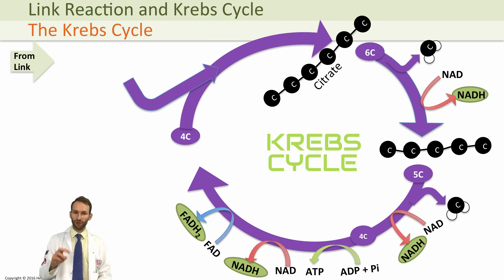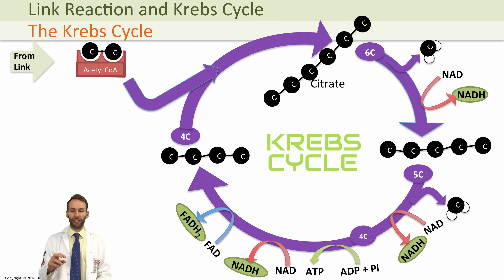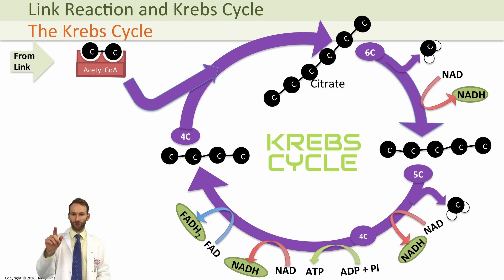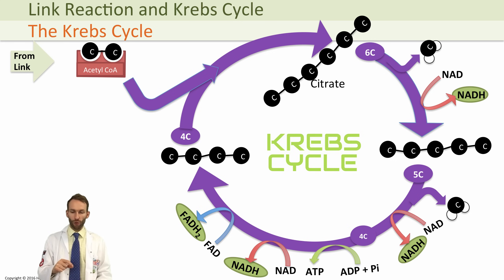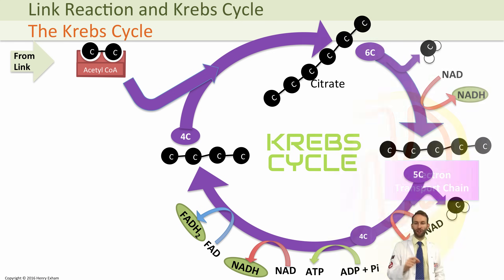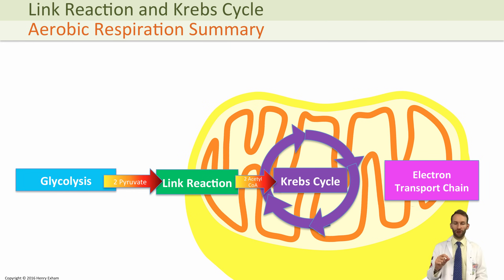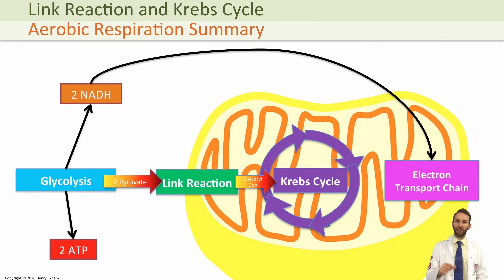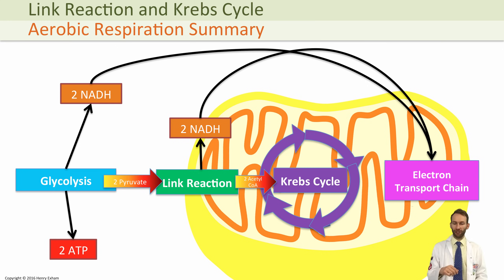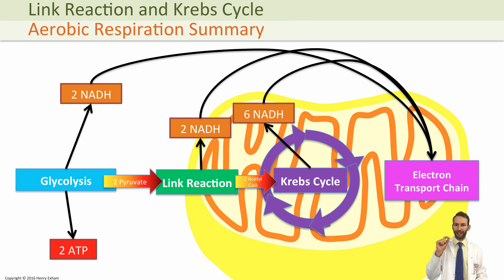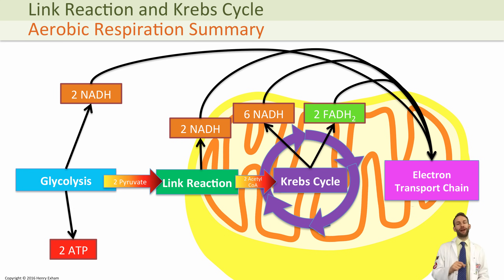Remember that we did start with two acetyl-CoAs, so we're actually going to end up with six NADHs — there are three on the diagram, but this happens twice because there were two acetyl-CoAs at the beginning. We end up with two FADH2s and two ATPs. Going back to our overall summary of aerobic respiration: in glycolysis we made two ATPs and two NADHs; in the link reaction we made another two NADHs; and in the Krebs cycle, for every glucose, we make six NADHs, two FADH2s, and two ATPs.